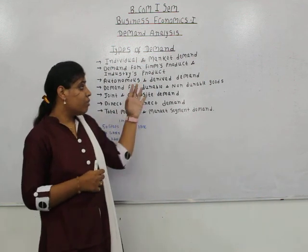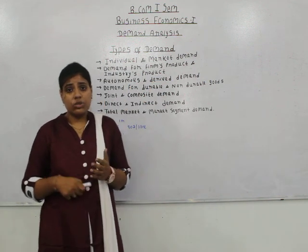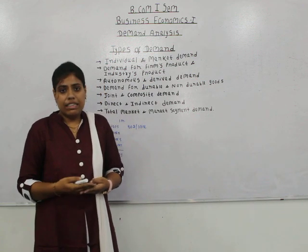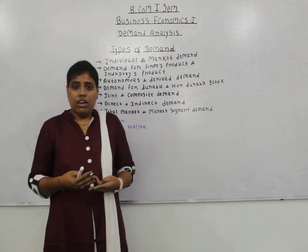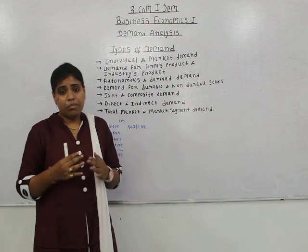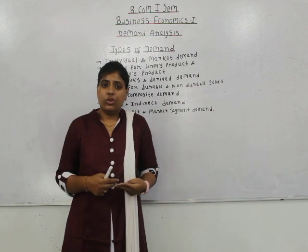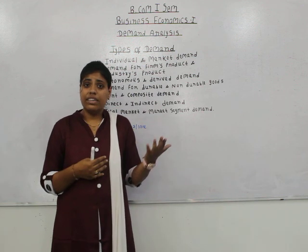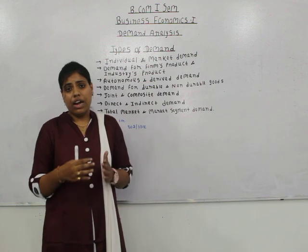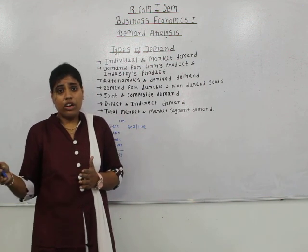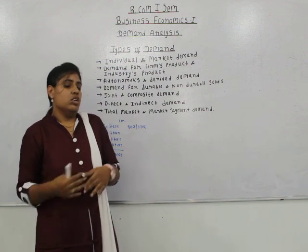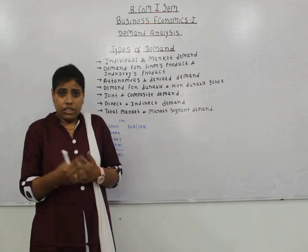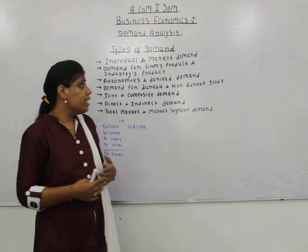Derived demand is a demand which arises due to the demand for another commodity. For example, demand for petrol, diesel, and raw materials — these products' demand depends on the demand of another product. Demand for petrol and diesel increases when demand for vehicles increases; demand for raw material increases when demand for production of commodities requiring that raw material increases. Such demand is called derived demand.